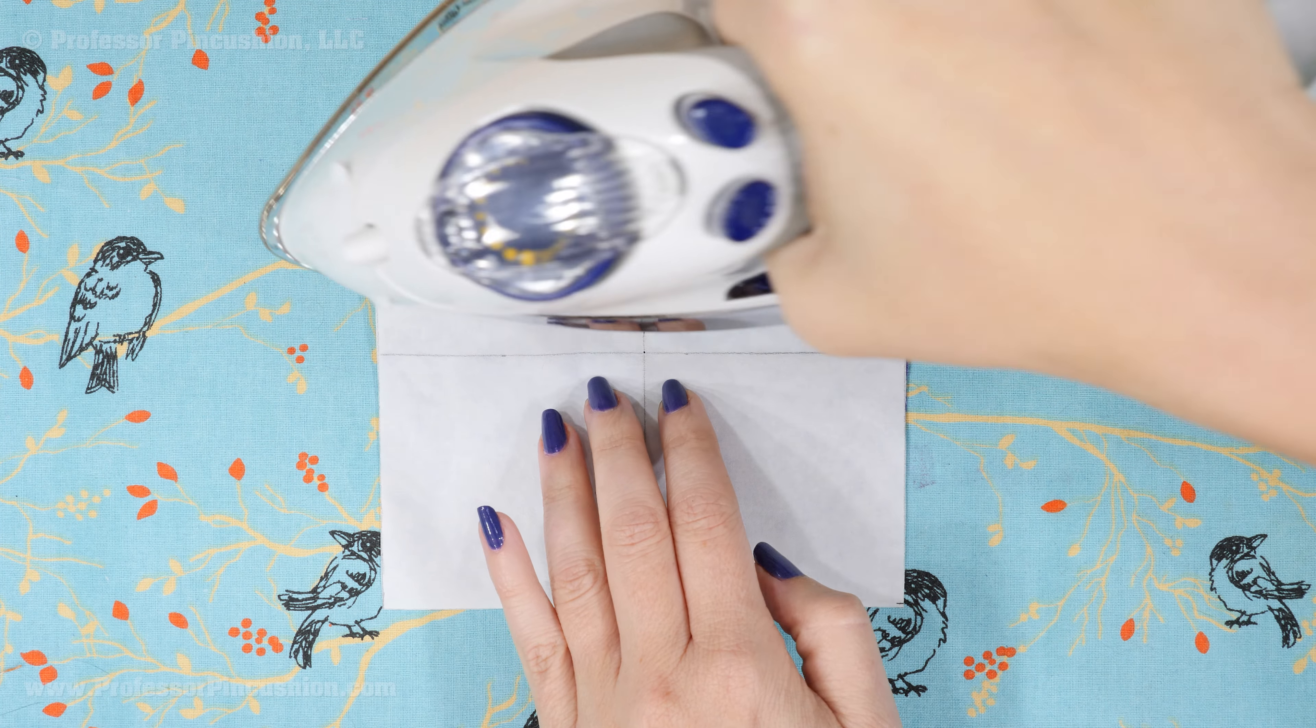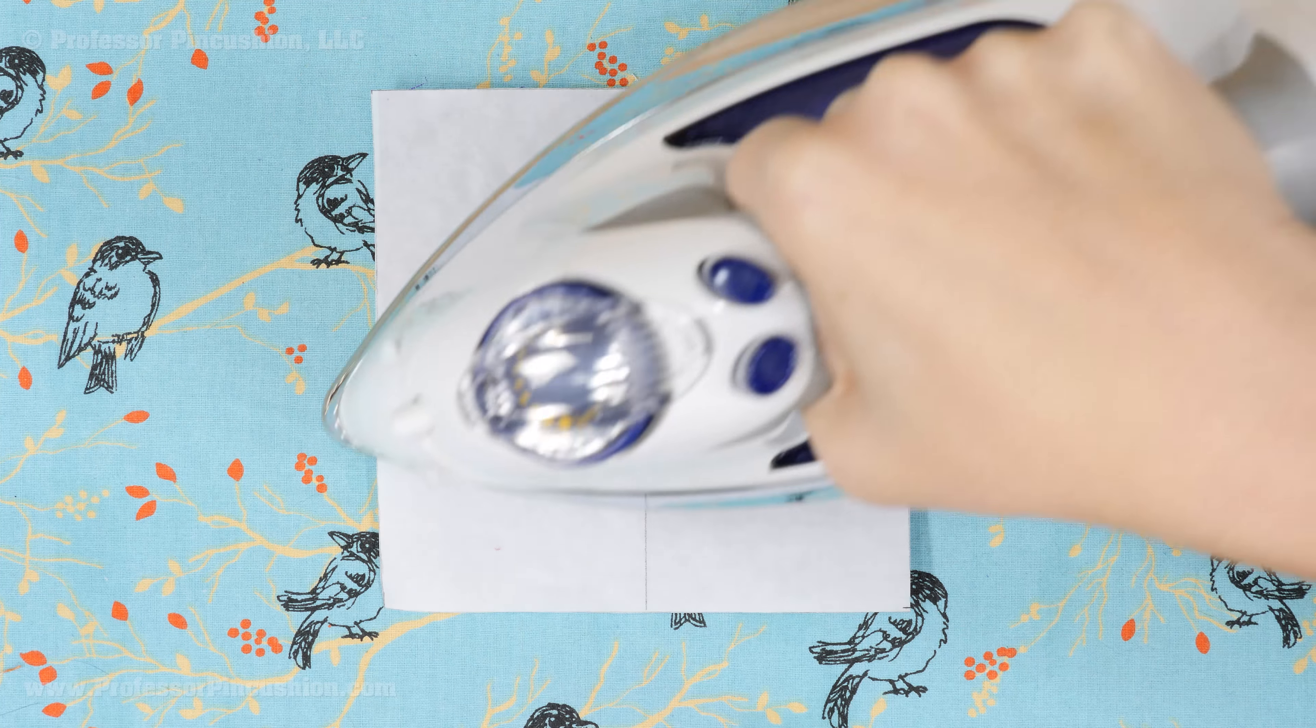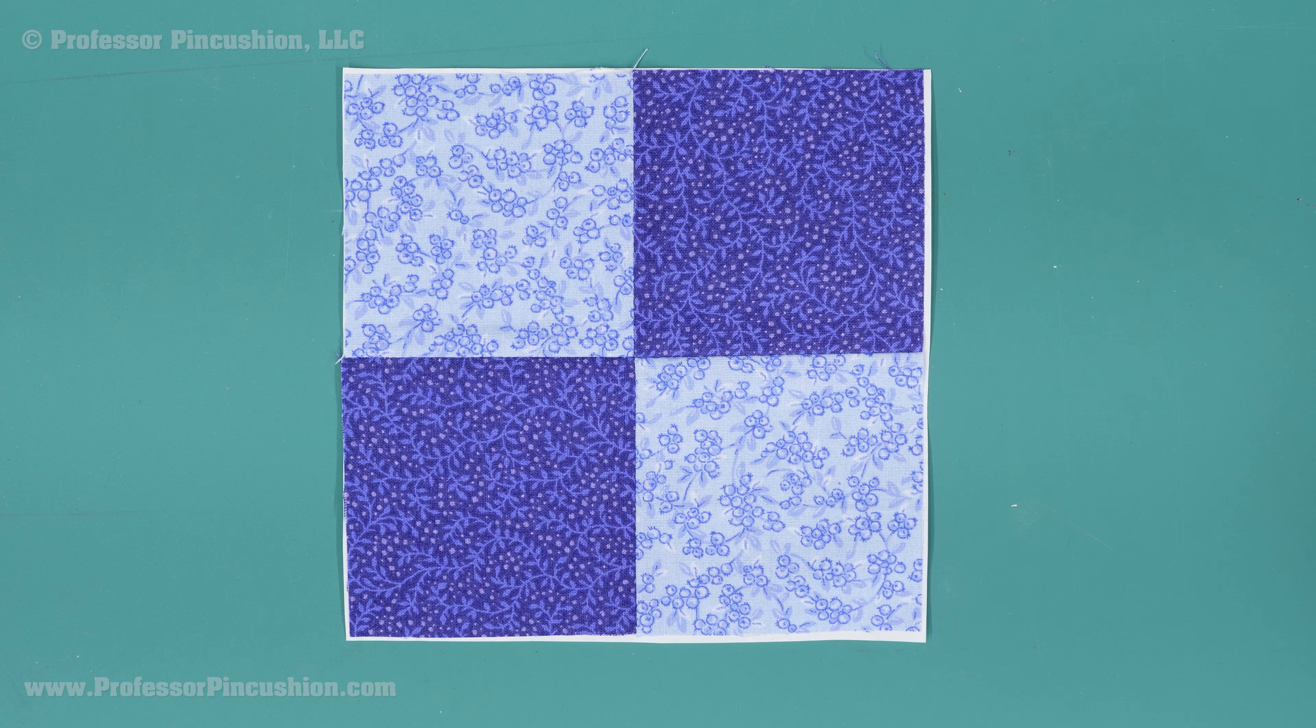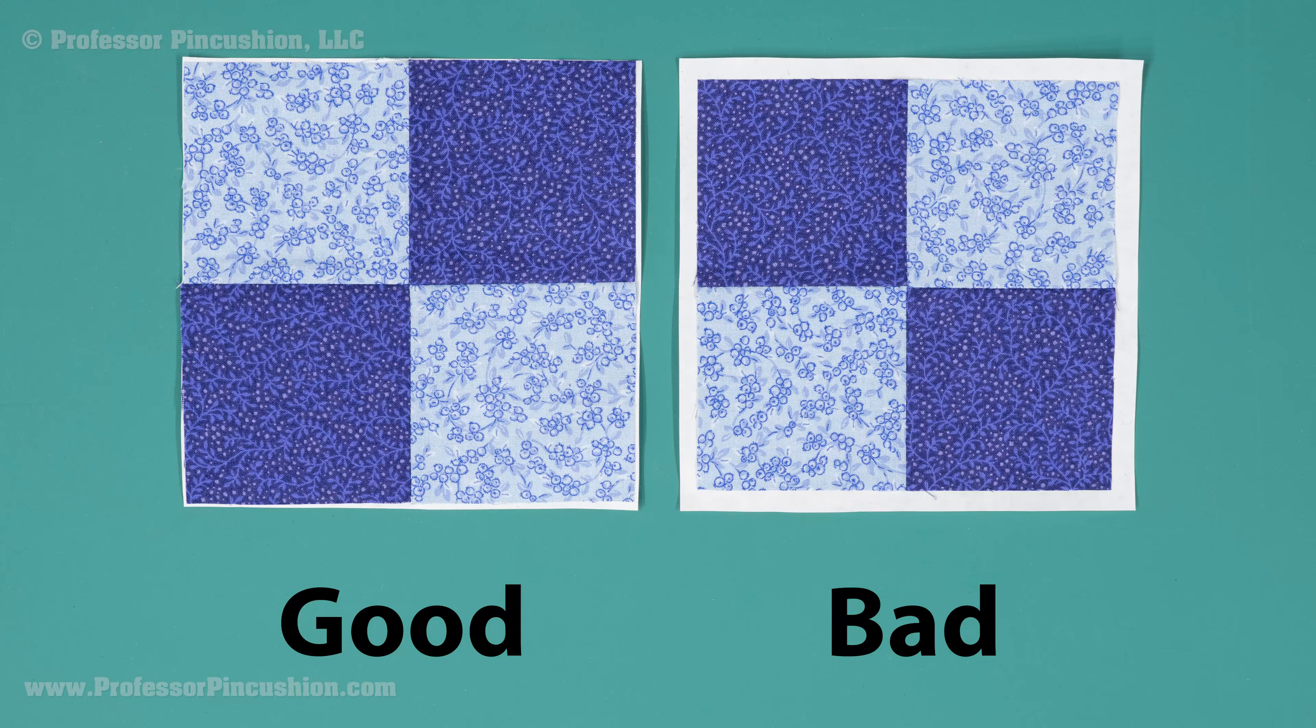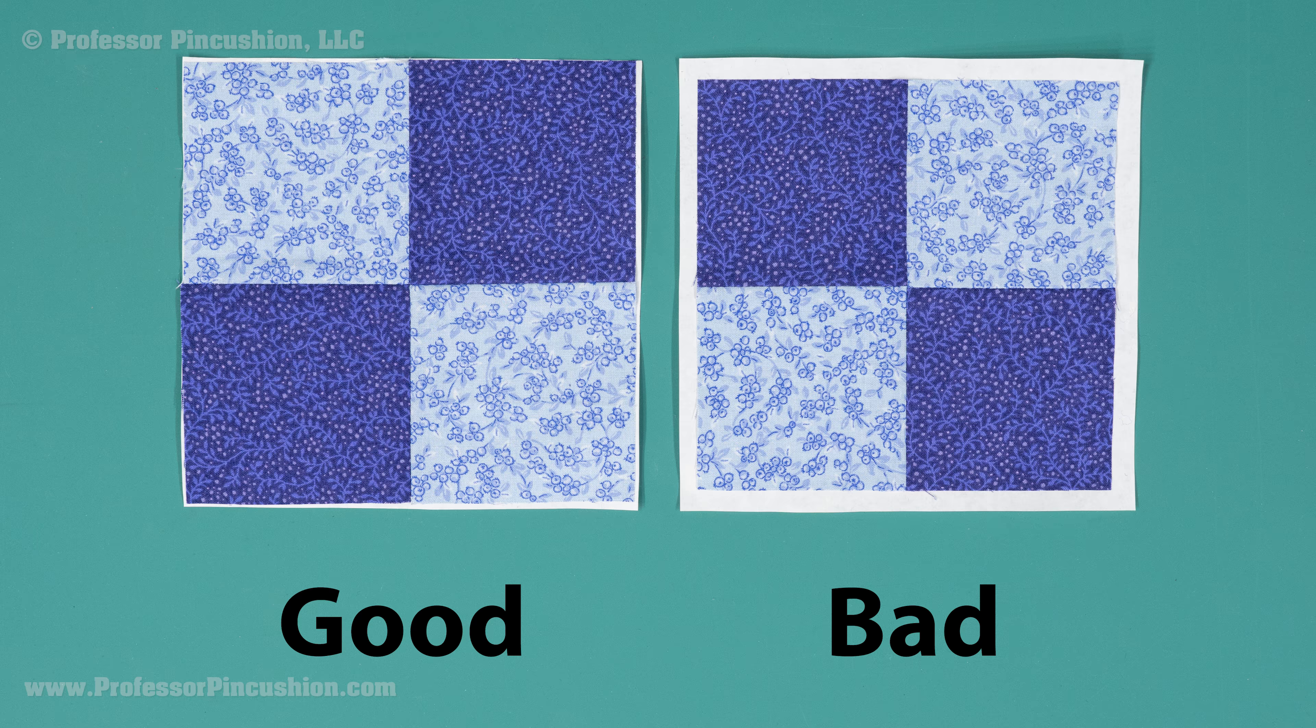With a warm iron, press the freezer paper. The wax side should adhere to the block. On the right side of your block, you'll see the paper peeking at the edges. The paper shouldn't be showing more than your quarter inch seam allowance, otherwise you may end up with a hole in your seam.